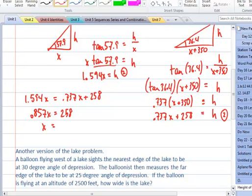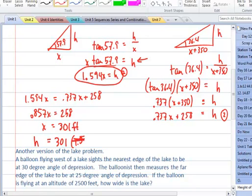So X is going to equal, we divide by 0.857. And then we got 301 feet. So that means our height, when we use that original equation for height, it's going to be 301 feet times 1.594 times the X value of 301. So the height should be 479 feet.